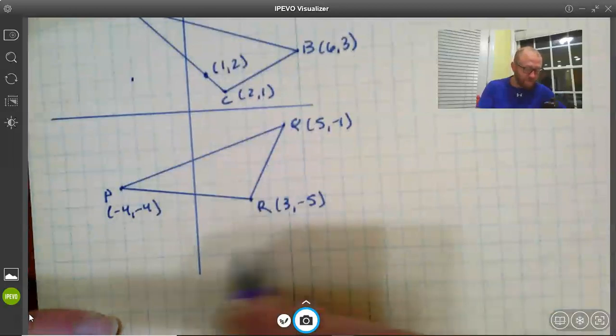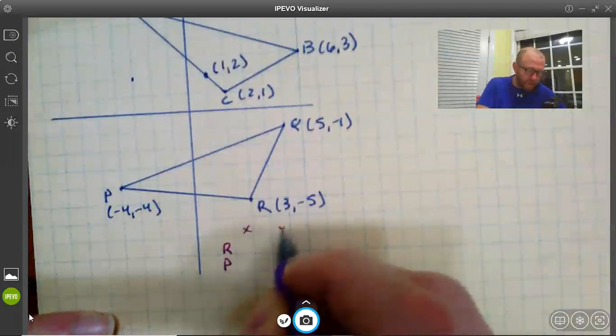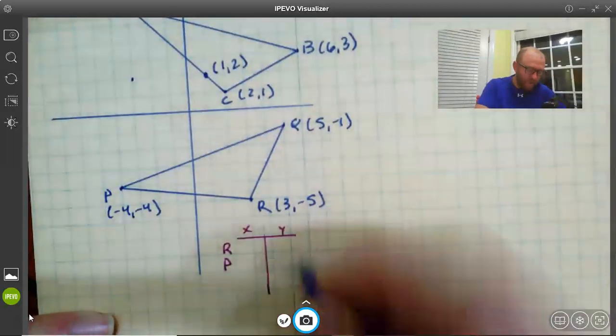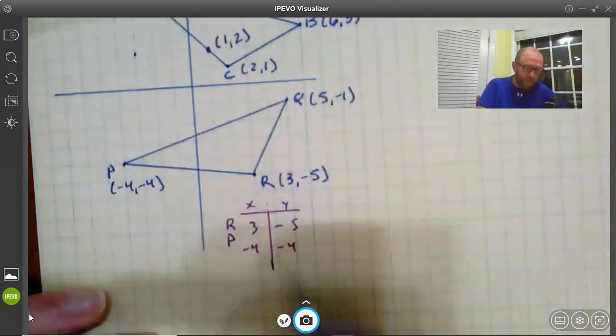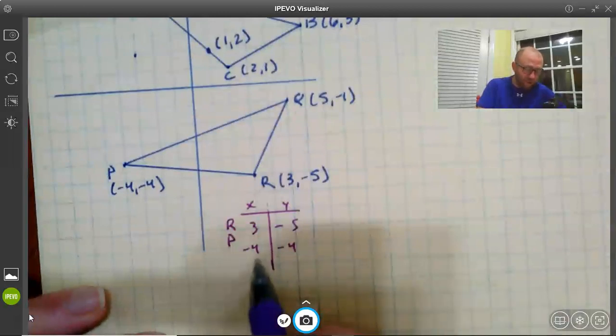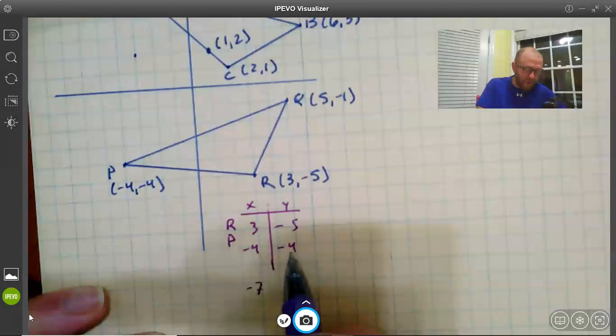So let's see here. The vector from R to P. Let's set up a little table here. We've got 3, negative 5, negative 4, and end minus start equals change. Negative 4 minus 3 is negative 7, and negative 4 minus negative 5 is positive 1.